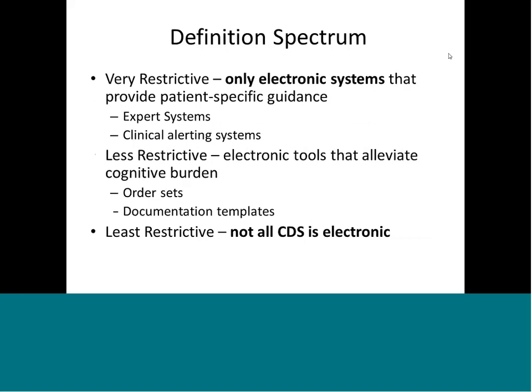Just to emphasize, the spectrum can be perceived from the most restrictive standpoint — it only pertains to electronic systems, expert systems, and clinical alerting systems — to the least restrictive, whereby clinical decision support includes paper-based order sets and paper-based clinical guidelines as well. It's not just about a pop-up alert; it is part of the electronic health record in the form of documentation templates and static order sets.